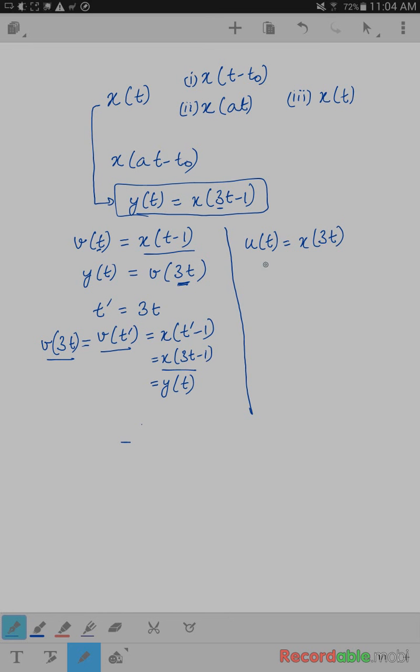So in this case, u of t is x of 3t, and then the question is y of t is equal to u of what? What goes in here? And in this case, what we can do is we can define t prime as a new variable, which, as we can check, will turn out to be t minus 1 over 3.